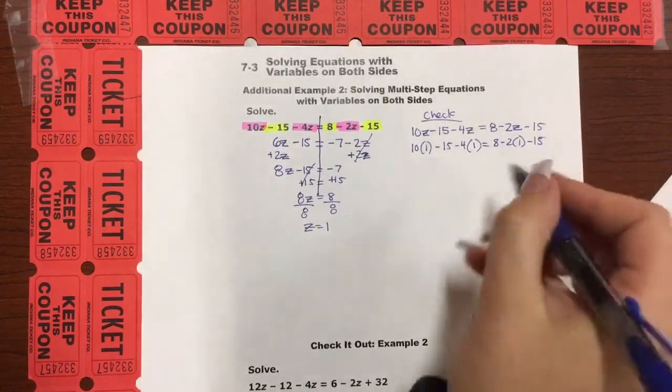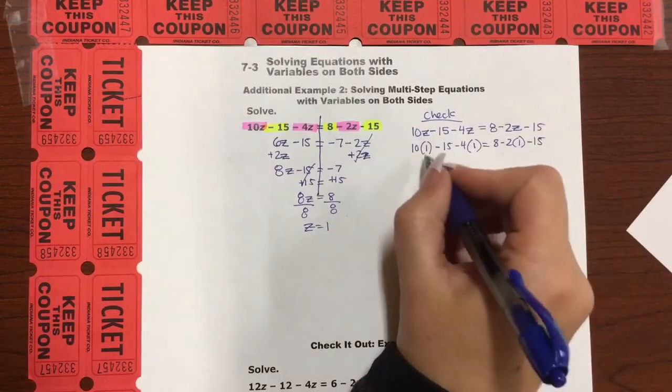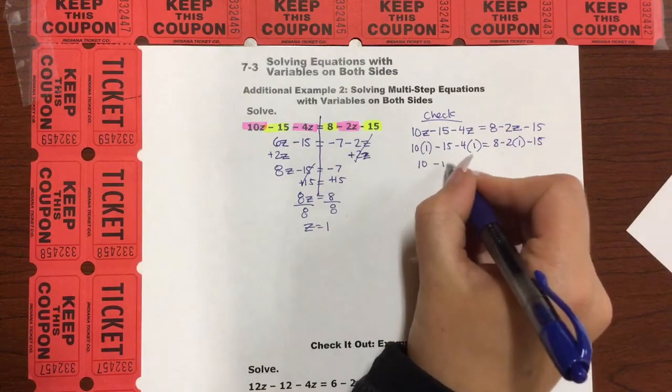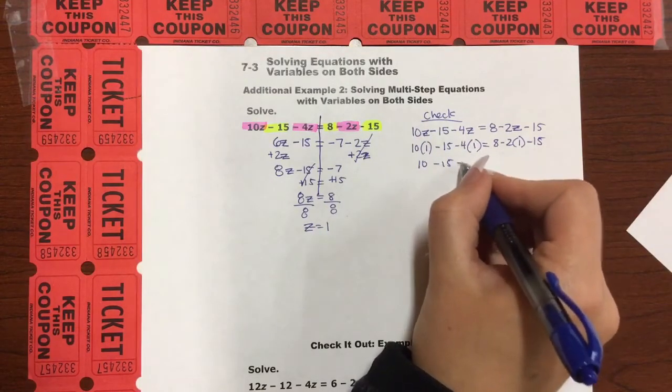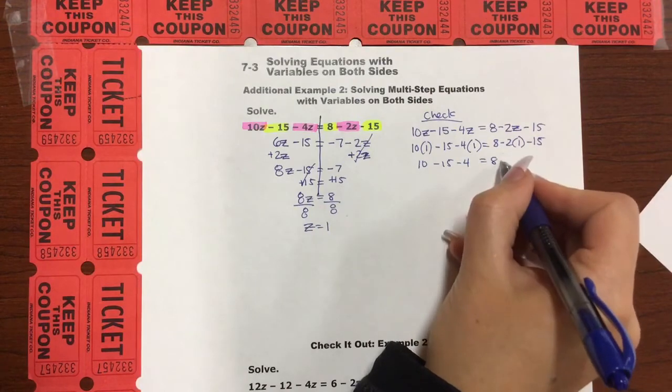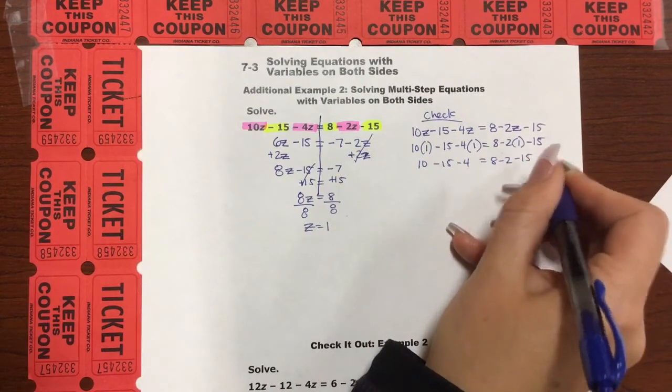Wow, this is a lot. There's a lot going on. I'm going to do the multiplication first. So I got 10 times 1, which is just 10, minus 15, minus 4 times 1, which is just negative 4. 8, 2 times 1 is just negative 2, minus 15. Okay.